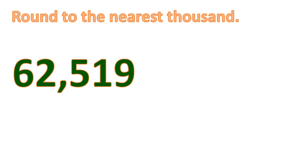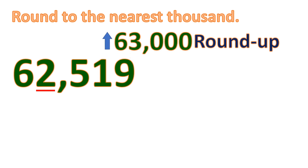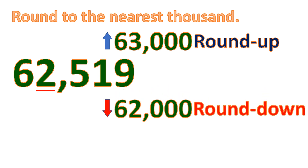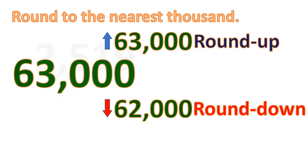Now let's try with another number: 62,519. We will round this to the nearest thousand, so we focus on the digit in the thousands place. It will either round up to 63,000 or round down to 62,000. Looking at the number to the right, since it is 5, that means we will round up to 63,000.